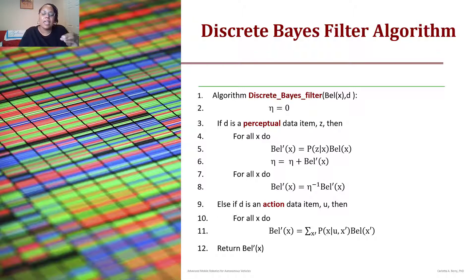Else if d is an action item u, where that's now going to be either velocity or motion control, we talked about there were two different ways to do that. Then for all x, the next posterior belief for that state is the summation over all x of the probability of x given u and the current state times the belief that it's in that current state.